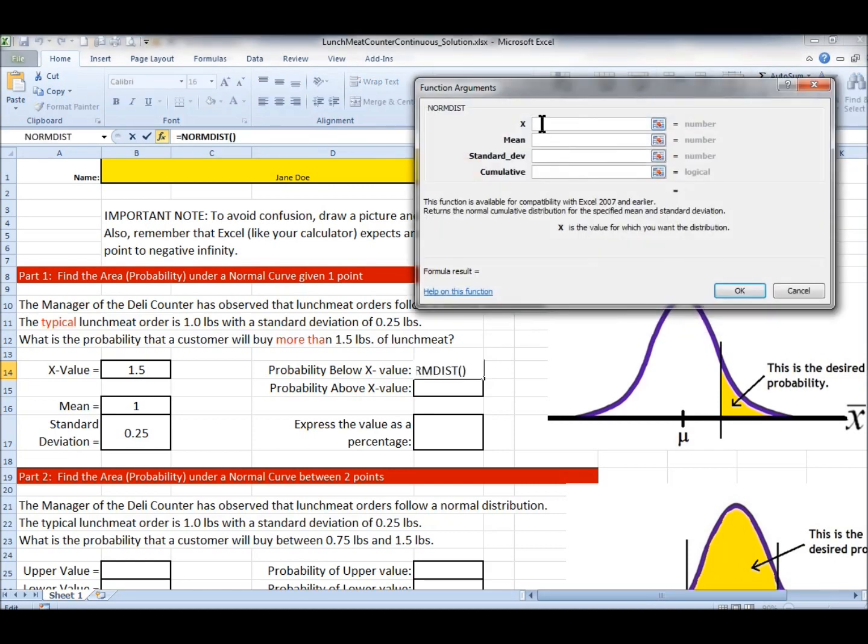The first thing it wants to know is what is the x value, the value for which you want the distribution. Well that's 1.5 so I'm going to just click. See how it puts B14 in there? Next thing it wants to know is what is the mean? Well the mean is one pound of lunch meat. It says what is the standard deviation? So I'm going to click on that line. 0.25.